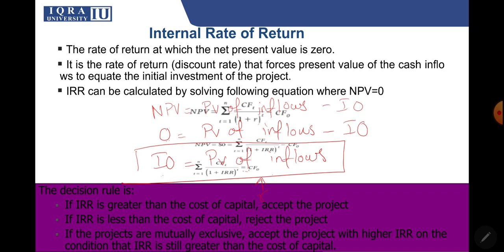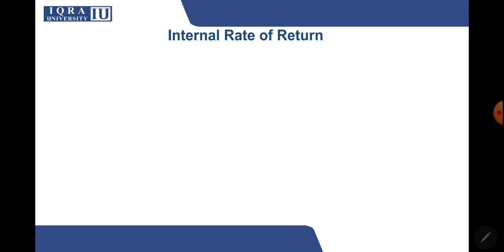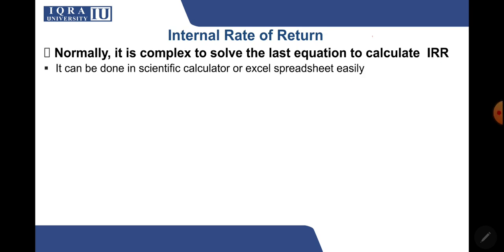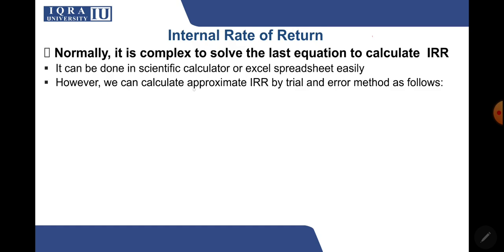These are the decision rules — we'll come back to those later. Normally it is complex to solve this equation to calculate IRR exactly; it can be done using a scientific calculator or Excel spreadsheet easily. We can also calculate an approximate IRR — not an exact value, but you can find the approximate rate by trial and error method.